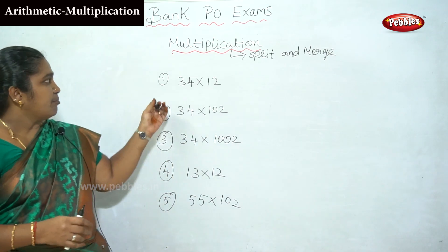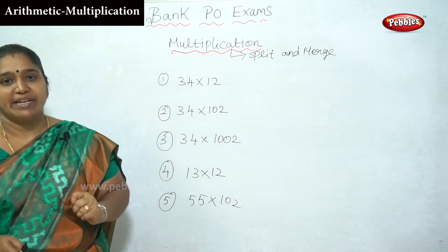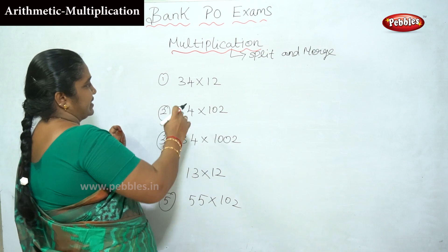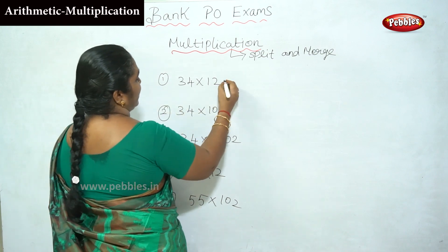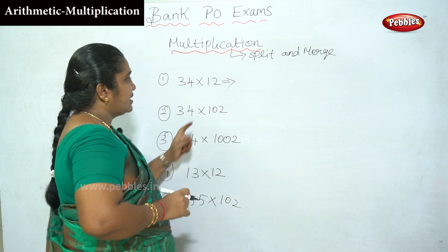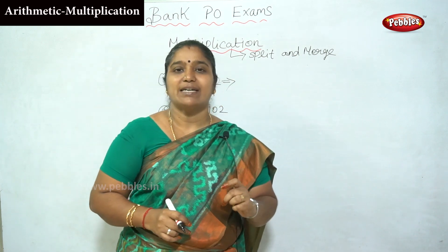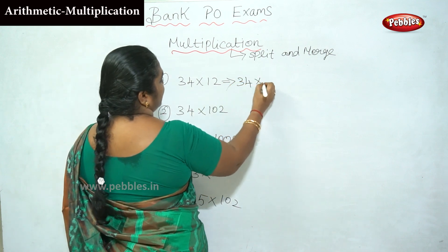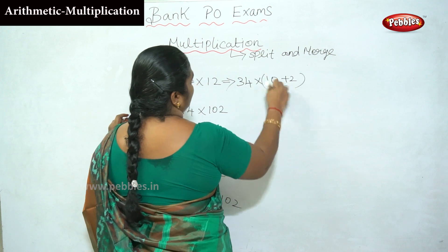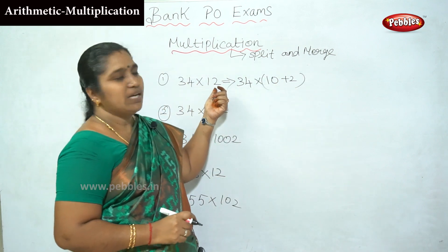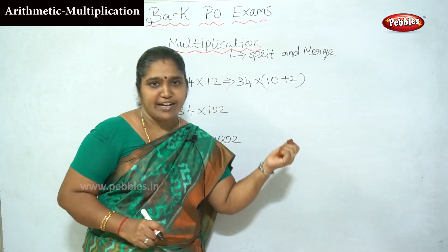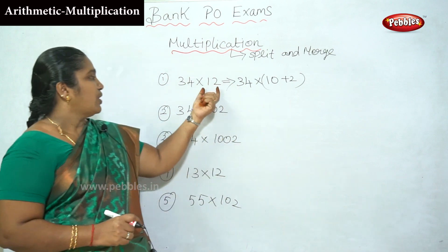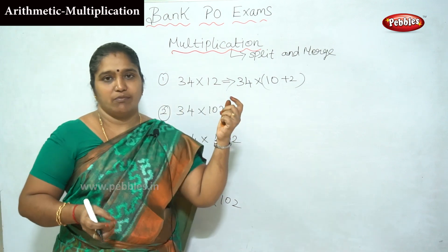Now we can see the simple way of multiplication. We can call this the split and merge method. The first sum is 34 into 12. I have split 12 into 10 plus 2, because 10 plus 2 is easy to multiply — no need for the 12 times table.